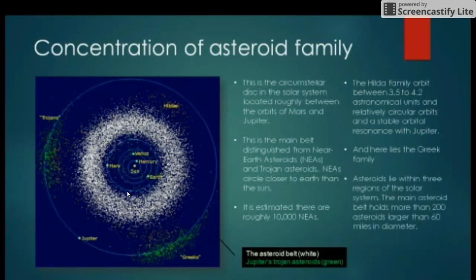Asteroids lie within three regions of the solar system. The main asteroid belt holds more than 200 asteroids larger than 60 miles in diameter.